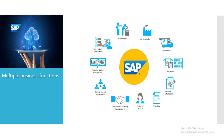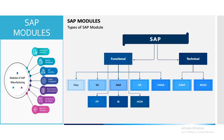SAP operates across multiple business functions and different types of business processes like procurement, manufacturing, fulfillment, inventory, business intelligence and reporting, customer service, customer relationship management, human capital management, financial and asset management, and sales and order management. SAP modules are divided into two types: technical and functional.